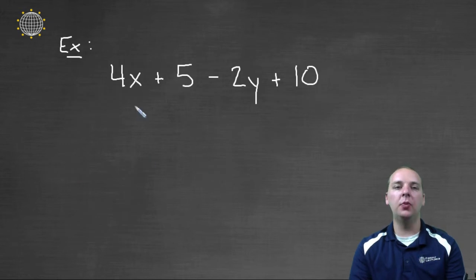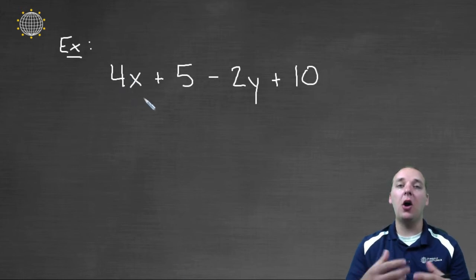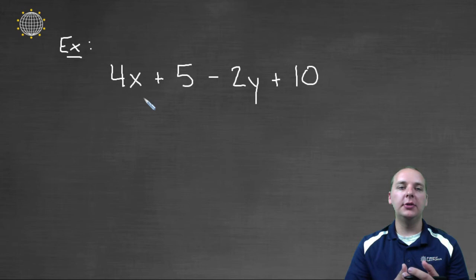Alright, let's look at one more example. Let's say we have four x plus five minus two y plus ten. Now it sounds very appealing to take four x plus five and call it nine x, because you've got four x and you just want to add five to it. But you see four x and the five, they're not like terms.